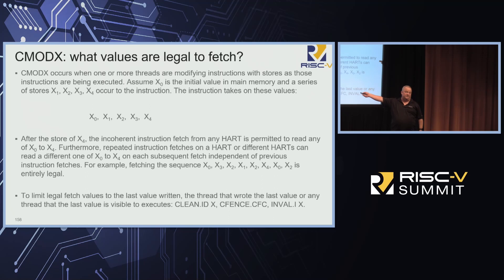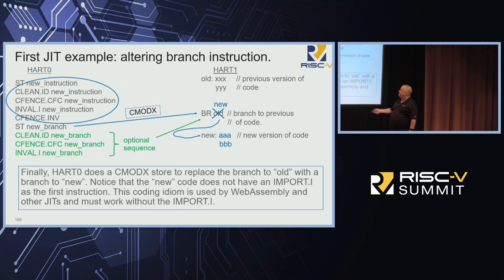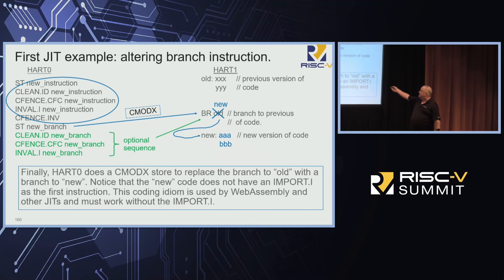Let's look at how this plays out for JITs. One thread creates a new set of instructions — heart zero, the JIT, creates new instructions. Then we do a C mod X store which directly modifies the instruction. Not everybody sees this update instantly; you can still see the old value. If you want to make sure people see it, the creating hart can do the clean, fence, and inval here to make everybody catch up more quickly rather than waiting for it to propagate out of I-caches. Once modified, we branch to this new code and run. Unfortunately — I just lied to you — that doesn't work without a new rule.